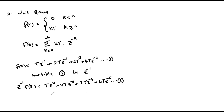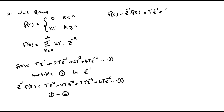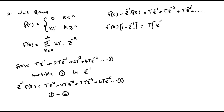If we subtract equation two from equation one, on the left-hand side we have F of z minus z to the power minus one times F of z. On the right-hand side we get T z to the power minus one, plus T z to the power minus two, plus T z to the power minus three, and so on. We can factor out F of z and write F of z times one minus z to the power minus one, equals T times the sum z to the power minus one plus z to the power minus two plus z to the power minus three and so on.